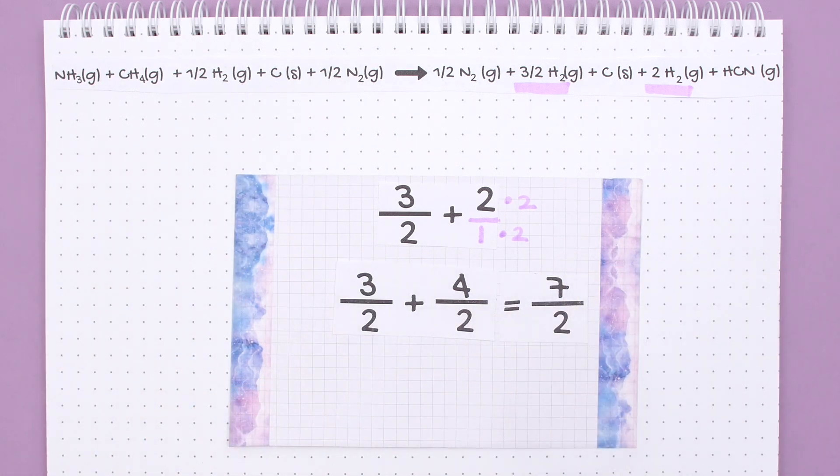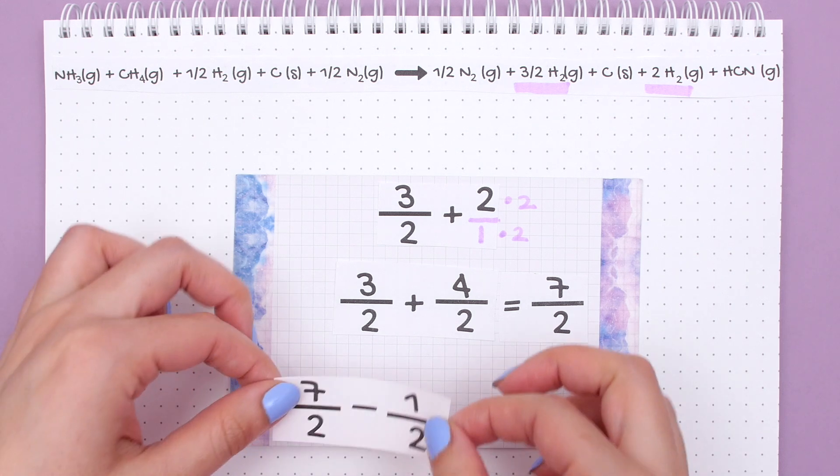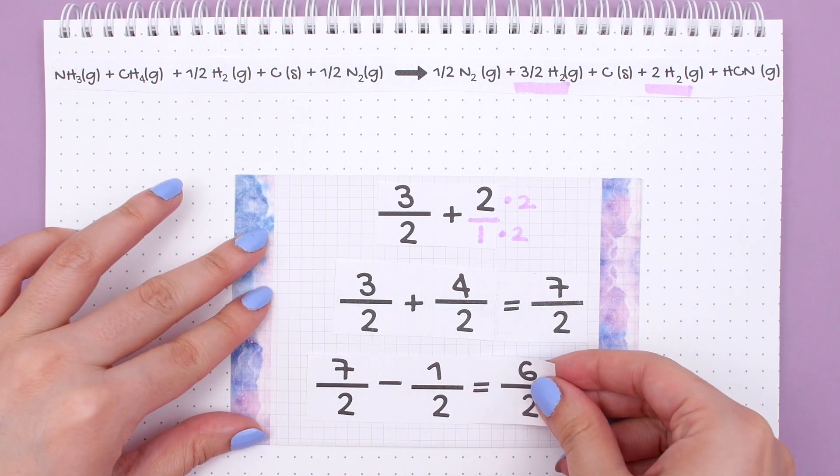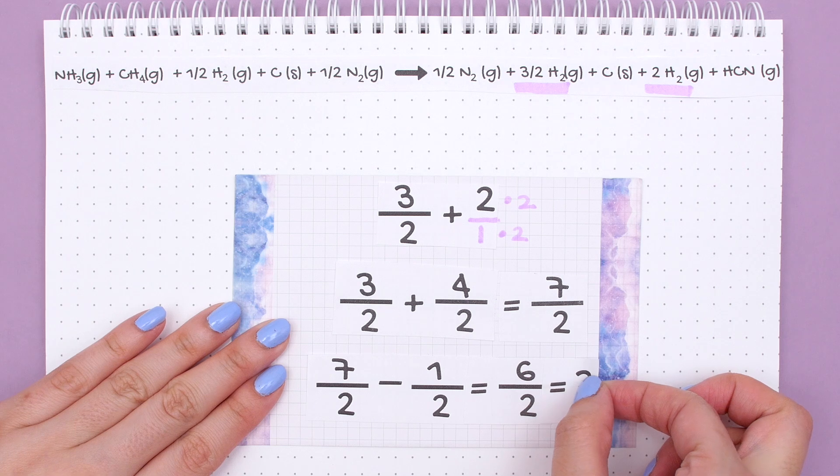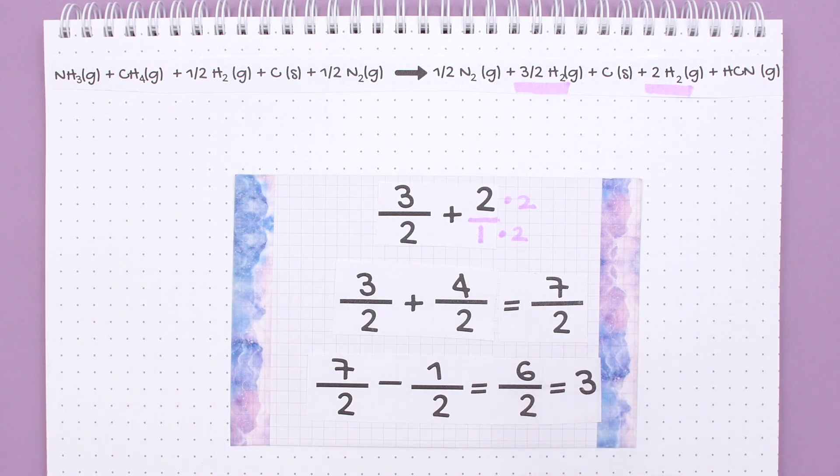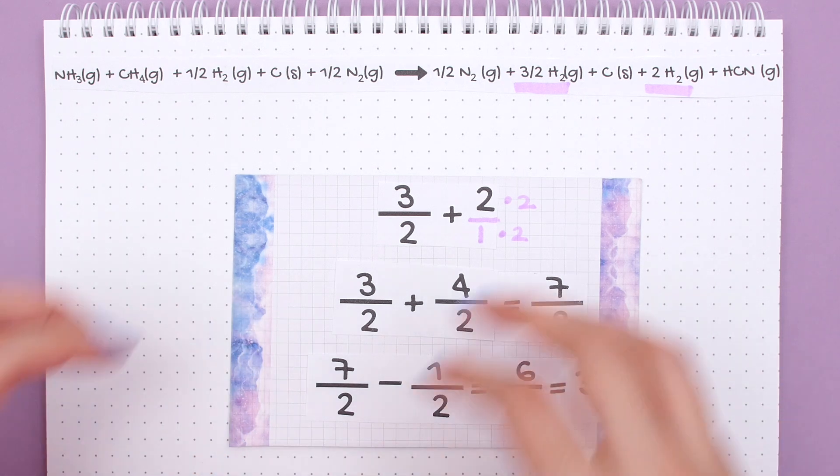Then subtract the amount of H2s we have on the reactant side from those we have on the product side, or really 7 halves minus 1 half, and we get 6 halves which can reduce down to 3. This worked out nicely because in the goal reaction we wanted 3 H2s.